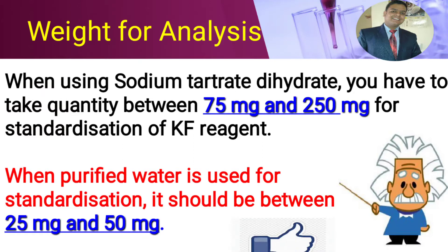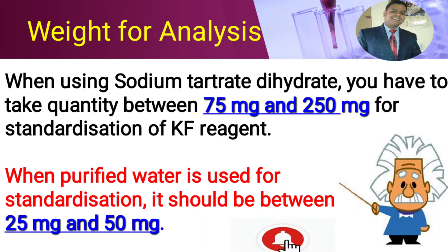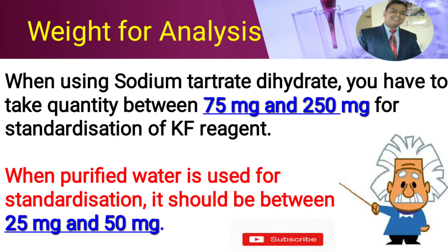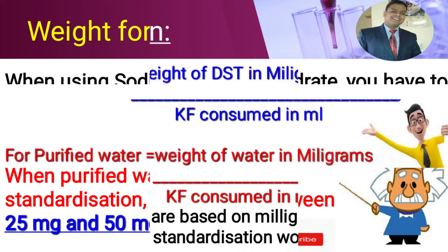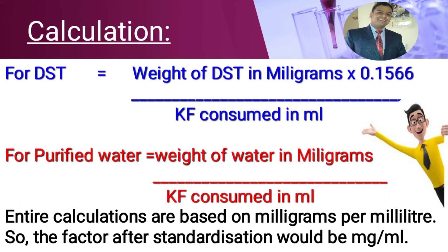For the weight taken for analysis: in case of sodium tartrate, 75 mg to 150 mg is taken, but in case of purified water, 25 mg to 50 mg is taken. The calculation formula for DST is: weight of DST in mg multiplied by 0.1566, divided by KF consumed in ml. For purified water: weight of water in mg divided by KF consumed in ml. The factor after calculation will be in mg per ml.